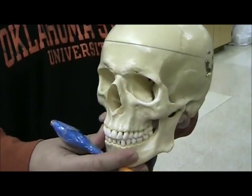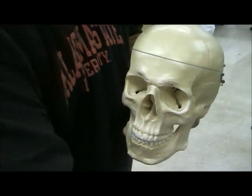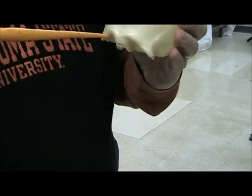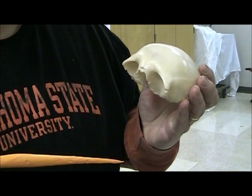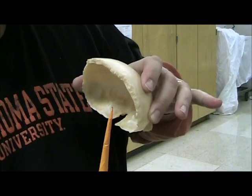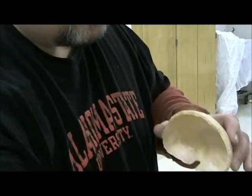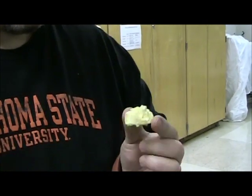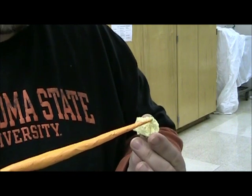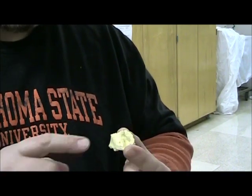Up front we have our frontal bone. I'll show you the frontal bone disarticulated. There's an ethmoidal notch right here — this is where the ethmoid bone resides. I'm going to grab the ethmoid bone and show you it disarticulated. This little piece that comes up in the midline is the crista galli of the ethmoid bone.